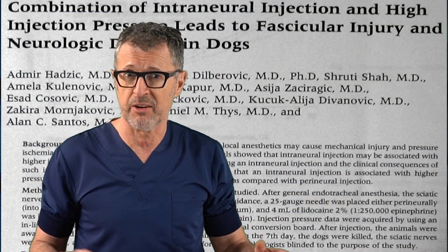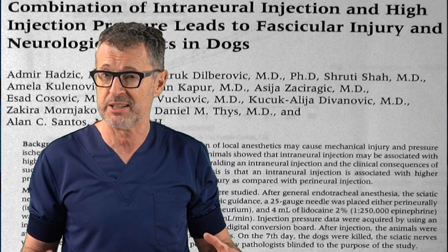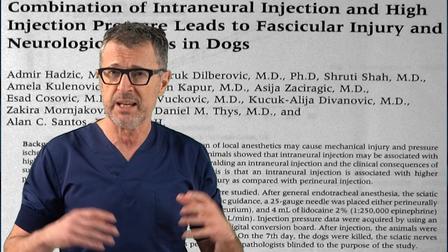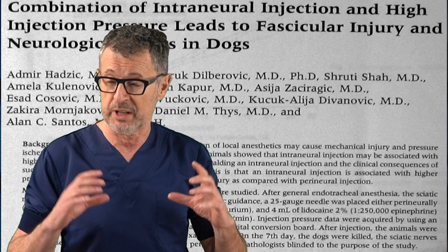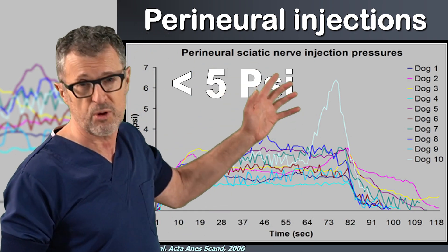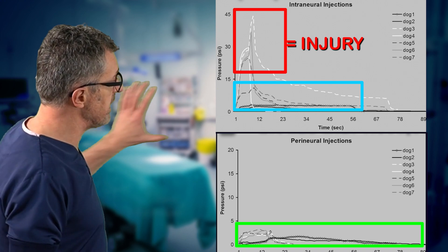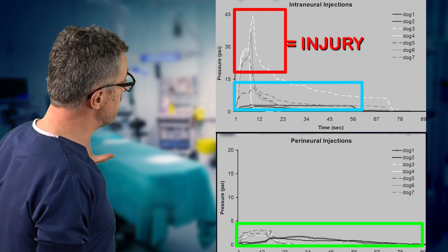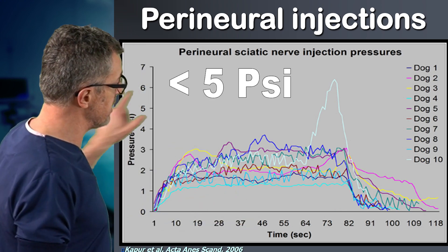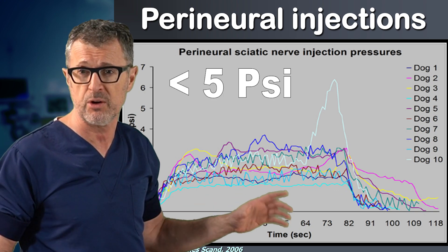Some 30 years later, we reproduced the findings that Doc Silander did in rabbits, but this time in dogs. What we found is that intraneural injection with high injection pressure leads to fascicular injury and neurologic deficit in dogs. If you look at the opening injection pressures during an injection outside of the nerve in a perineural space, you can see the injection pressures are very, very low consistently.